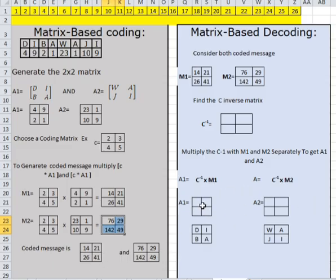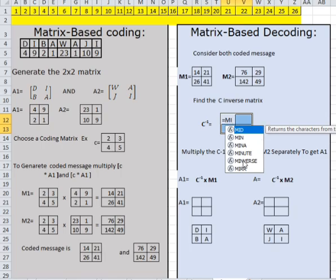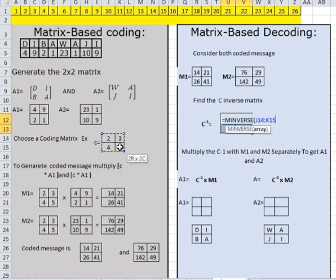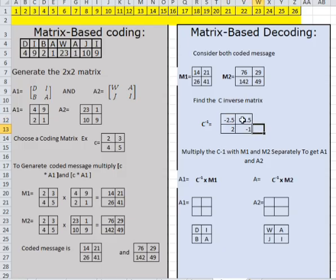Next, decoding. Once again, this is the formula — the original formula. So message one and message two: first you have to select the inverse matrix. C inverse is equal to matrix inverse — you have the inverse function. Select C, close the bracket, and then put Ctrl+Shift+Enter.